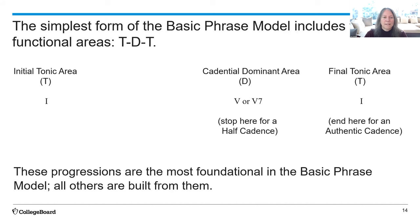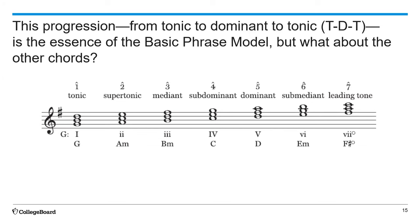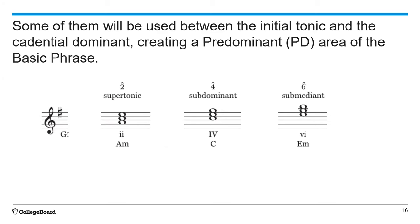These progressions — I to V or V7, or I to V or V7 then on to I — are the most foundational in the basic phrase model. All other tonal progressions are built from them. This progression from tonic to dominant to tonic (T-D-T) is the essence of the basic phrase model, but what about all these other chords? Some of them will be used between the initial tonic and the cadential dominant, creating a predominant area of the basic phrase. These are the supertonic, subdominant, and submediant chords.